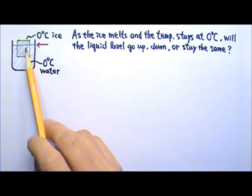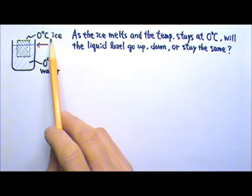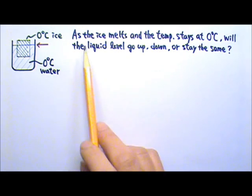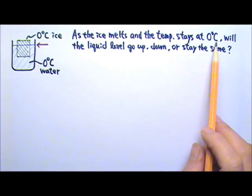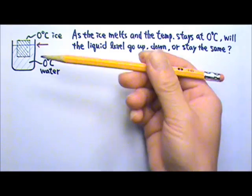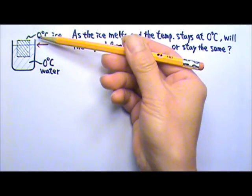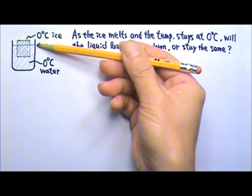In this cup, there is a block of 0 degree Celsius ice floating in 0 degree Celsius water. As the ice melts and the temperature stays at 0 degree Celsius, does the liquid level go up, down, or stay the same?